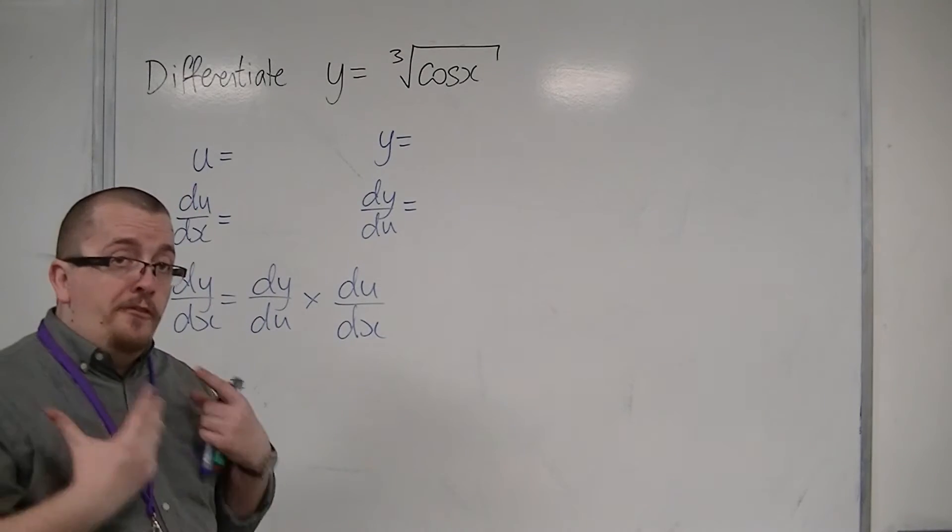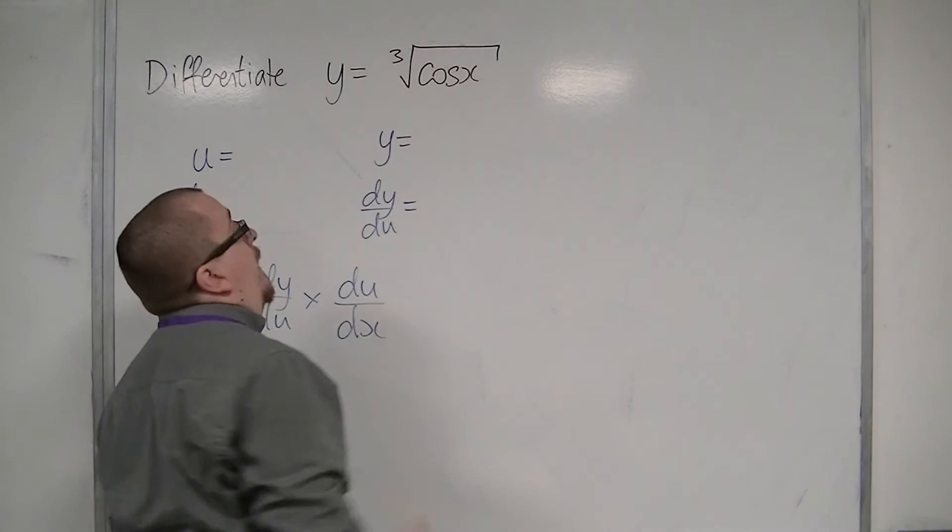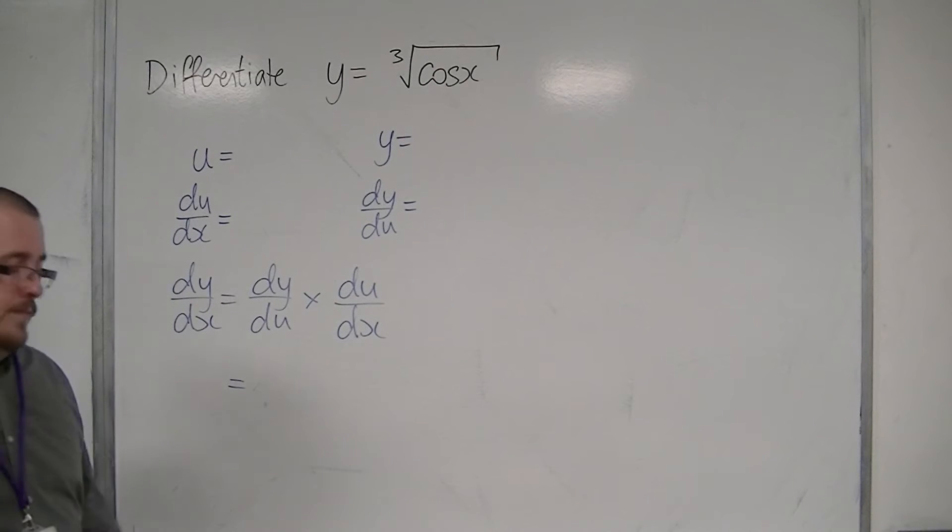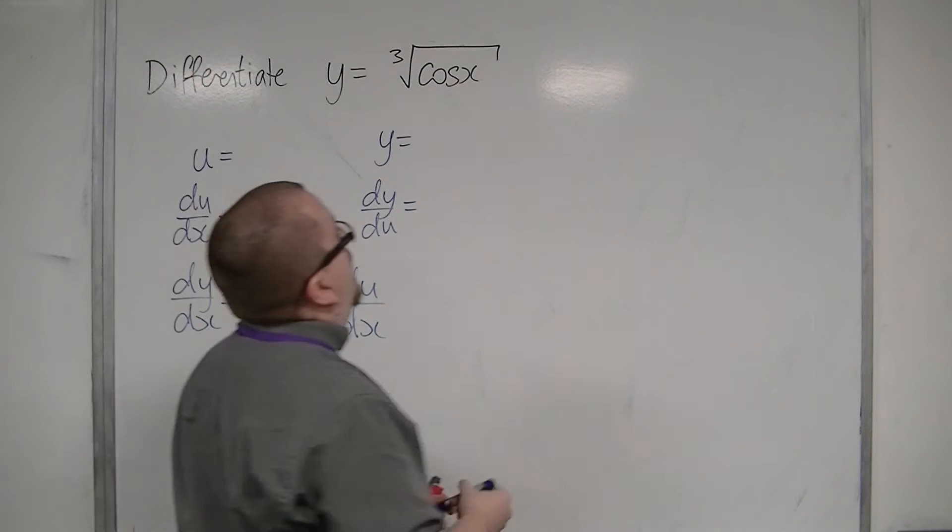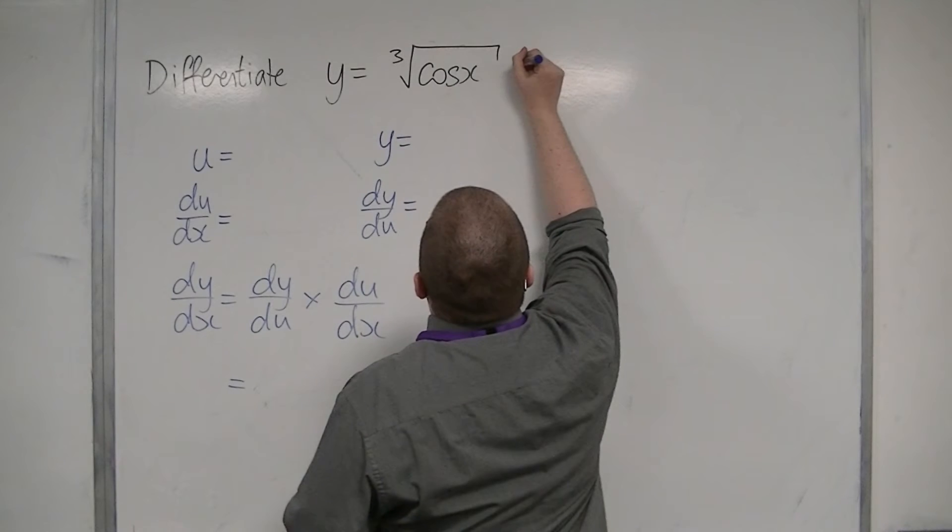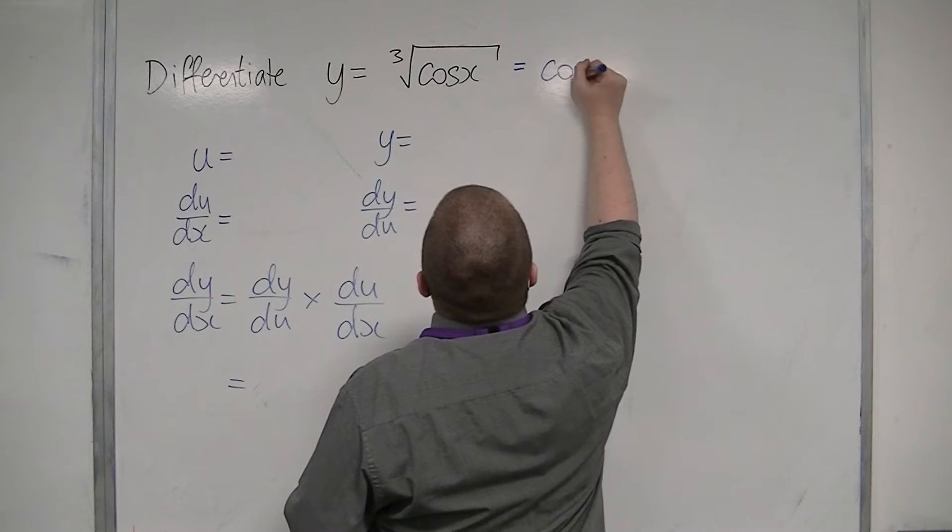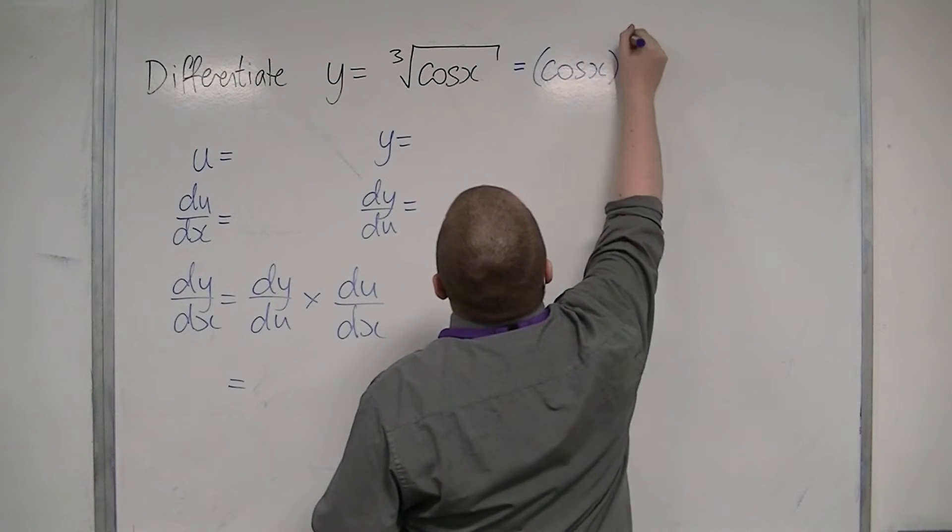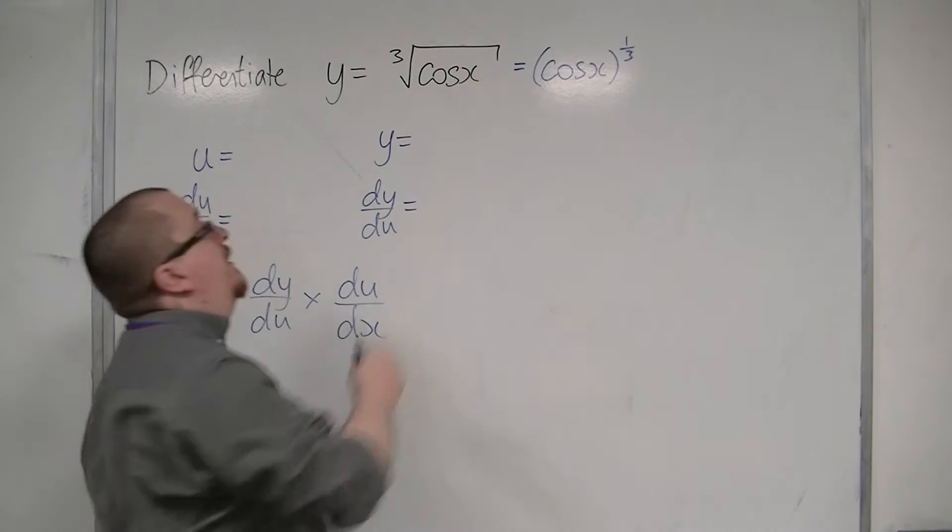This is a function of x, cos x, within a function of x's cube root. In order to make this more straightforward, we're going to write this as cos x to the power of one third, because these are synonyms.